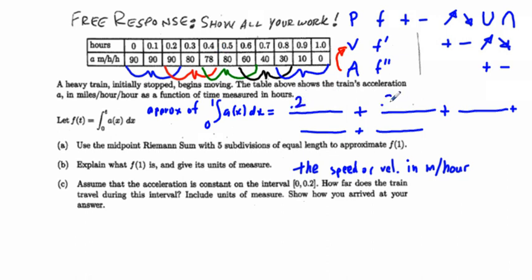So 0.2, 0.2, 0.2, 0.2, 0.2, and then we have our midpoint, where we're going to have our first midpoint is going to be that 90, so 0.2 times 90. Our second midpoint is going to be this 80.